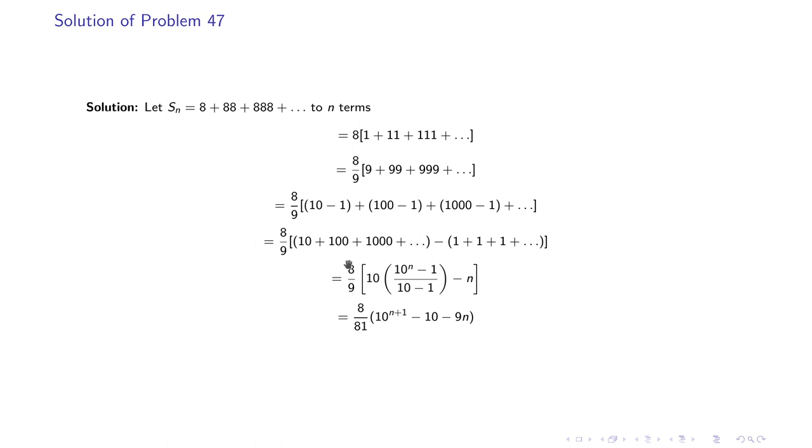Now the first term forms a GP with first term 10 and common ratio also 10. The second term is constant: it is all ones up to n terms, so it will become n. So we solve this and we get the end result as (8/81)(10^(n+1) - 10 - 9n).